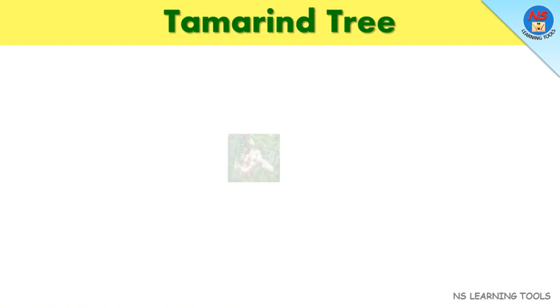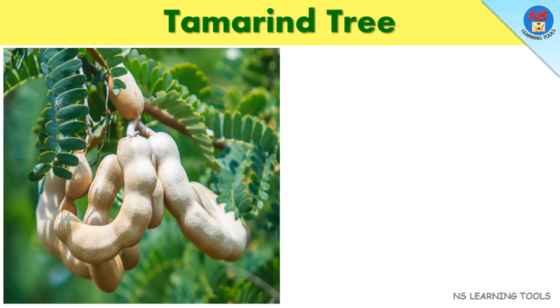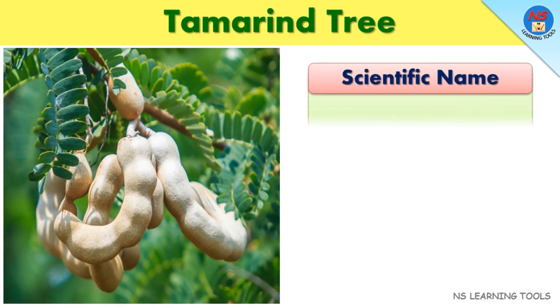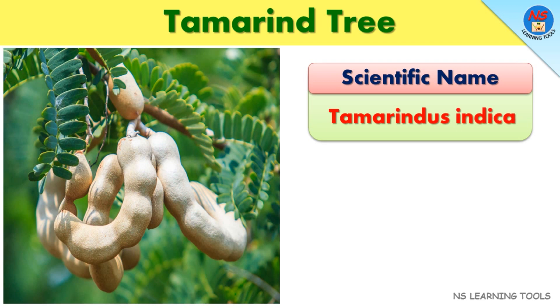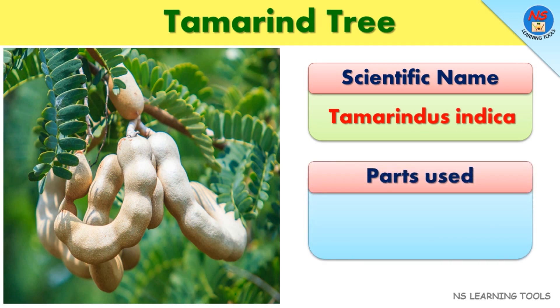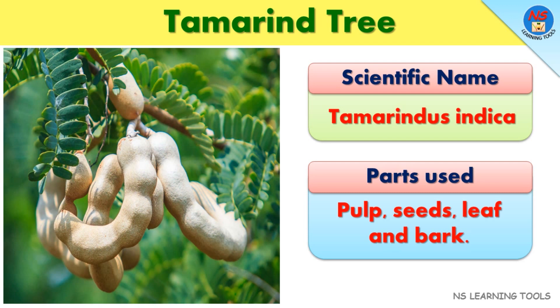Tamarind tree. Scientific name: Tamarindus indica. Parts used: Pulp, seeds, leaf, and bark.